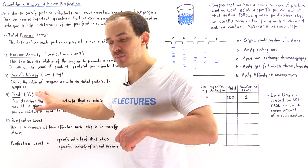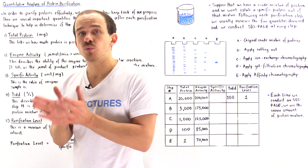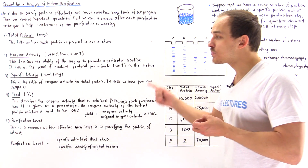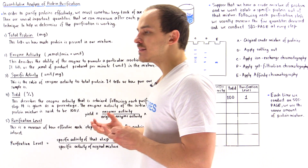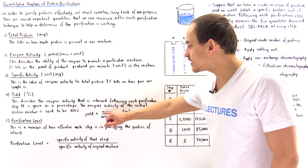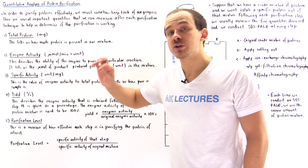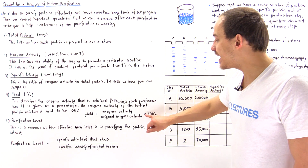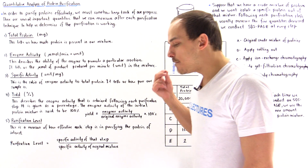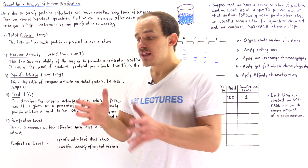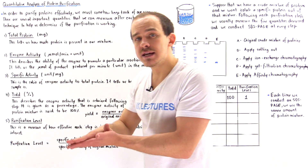Now let's move on to yield, or percent yield. The yield basically tells us how much of the protein we want to isolate we have left over compared to how much we began with. It describes the enzyme activity retained following each purification step, given as a percentage. The equation for yield is the ratio of the enzyme activity of that specific procedure to the original enzyme activity, multiplied by 100%. Because this is a ratio, the units cancel out and our units are simply percent. By definition, we give our original sample a yield of 100%, and as we purify our sample more and more, the yield should technically decrease.